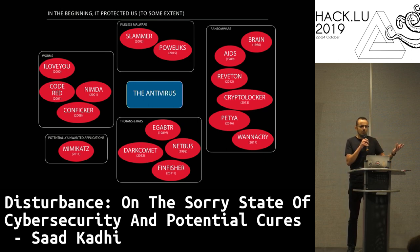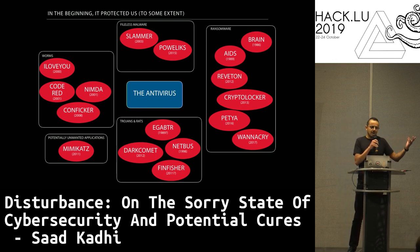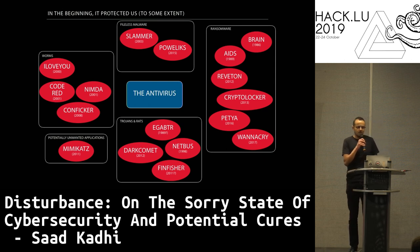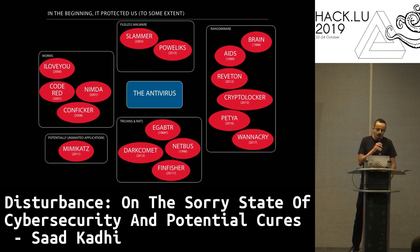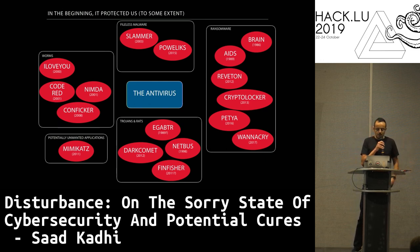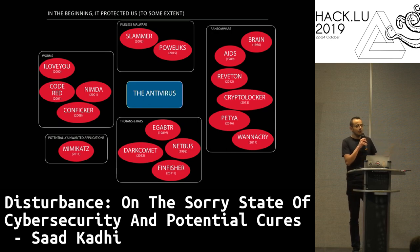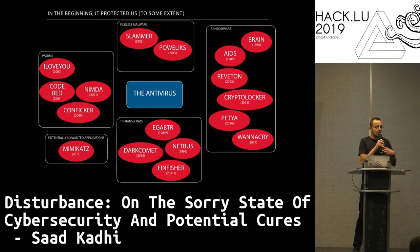Fileless malware — there is a lot of talk raging about fileless malware. The first I can think of is Slammer back in 2003, so that's about 16 years ago. Worms: I Love You, 2000. I'm not speaking about the Morris worm here, because I'm focusing on Windows — Nimda, Code Red. And also potentially unwanted applications like Mimikatz. Of course, a lot of antivirus products classify Mimikatz as a potentially unwanted application. I certainly don't want it in my network.